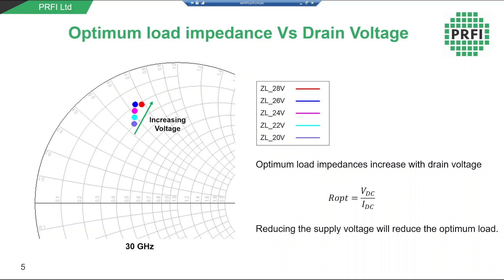Here I have plotted the optimum load impedances for a range of supply voltages from 20 to 28 volts at the center design frequency. We can see that the optimum loads increase with supply voltage, and therefore reducing the supply voltage will reduce the optimum load required. For this design I have selected the optimum load at 26 volts, which gives good saturated power whilst optimizing the PA for power backoff performance.